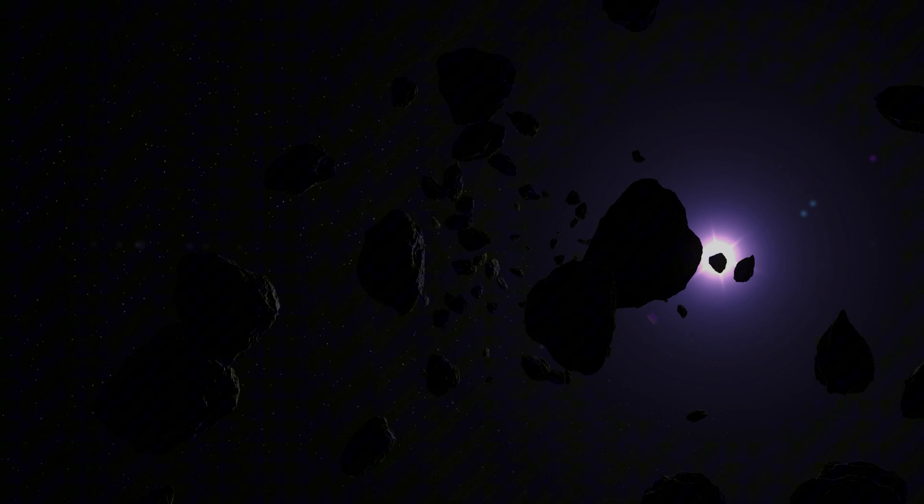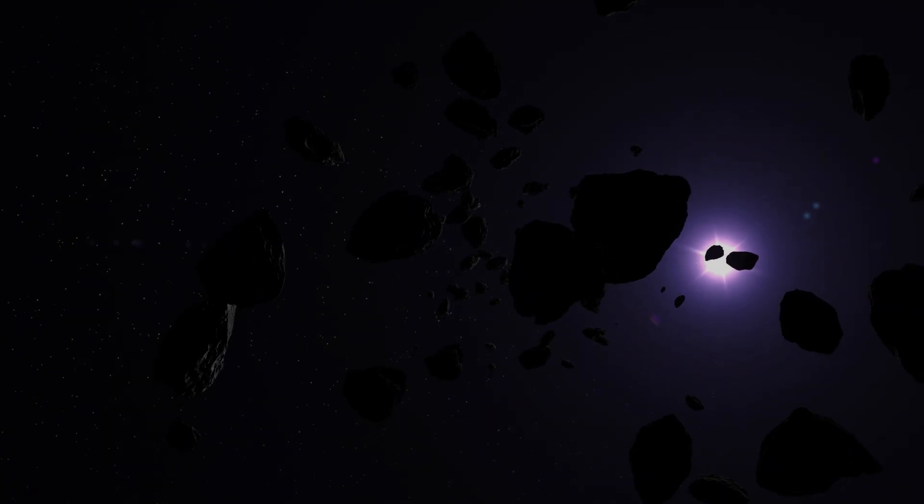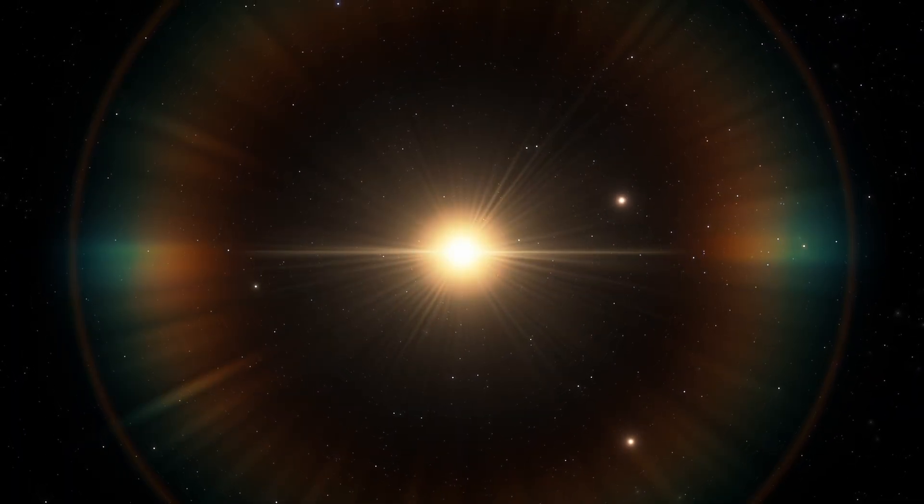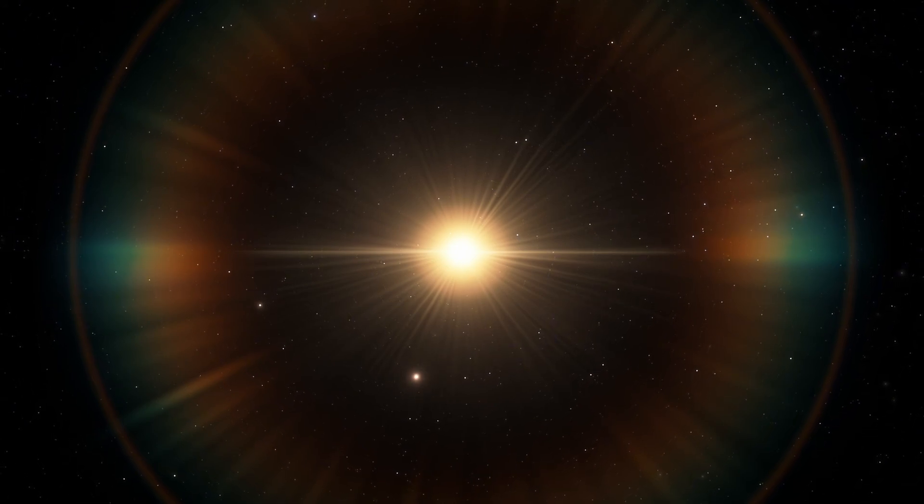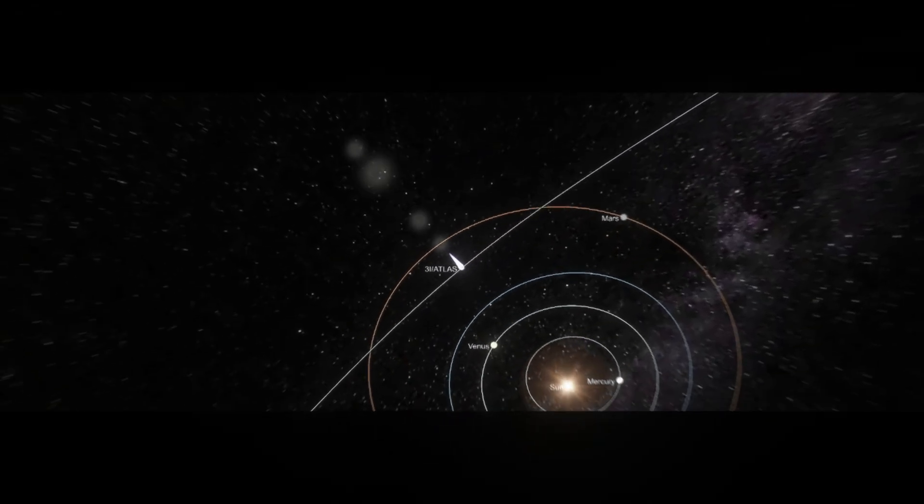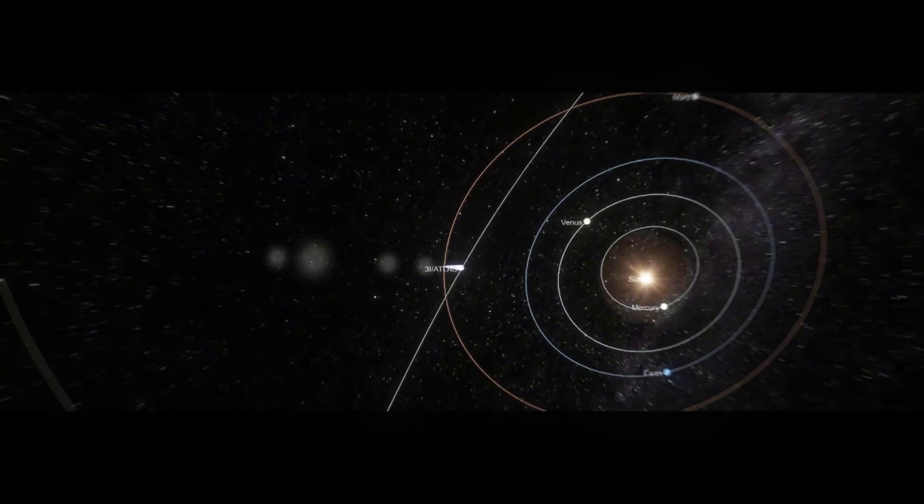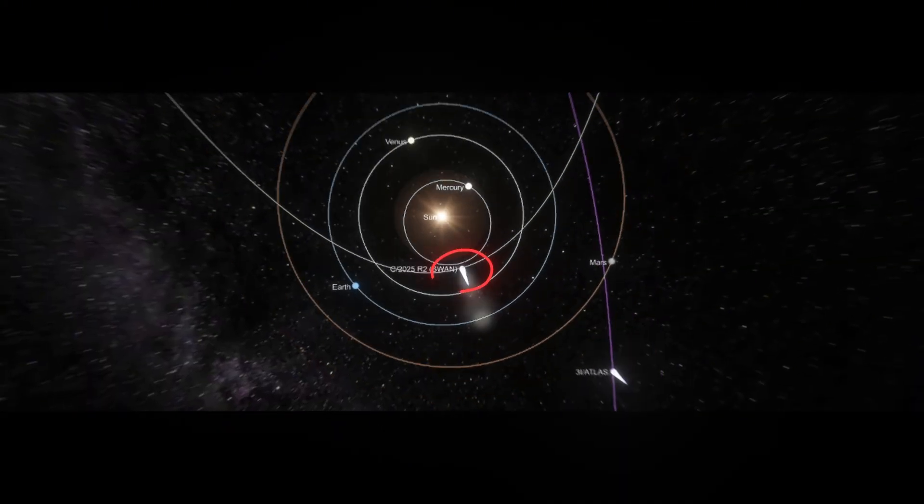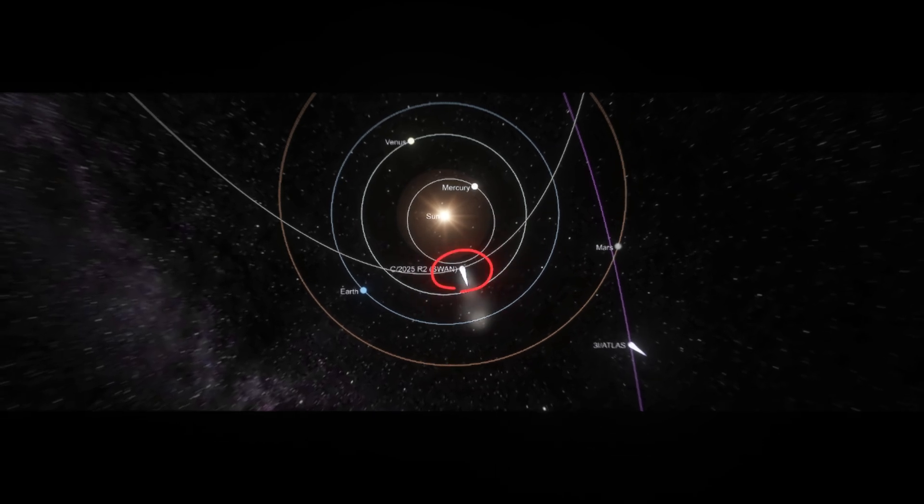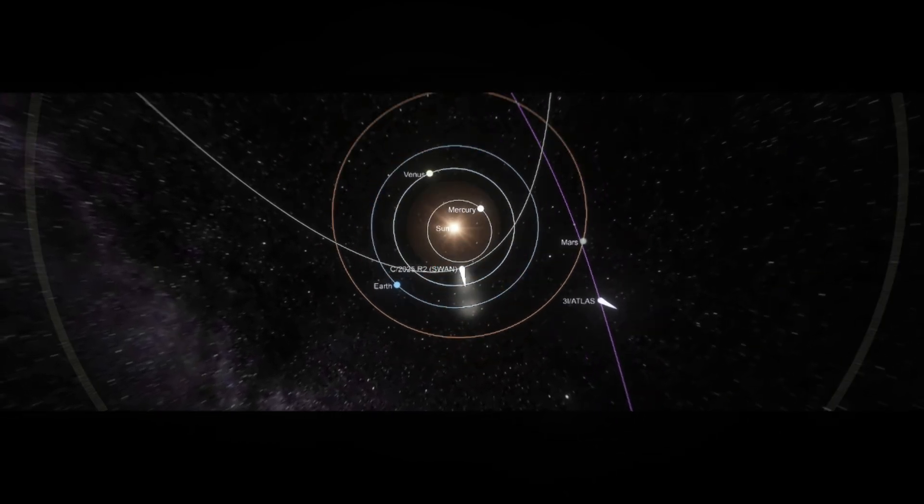Here's where the story takes a dramatic turn. Both objects are following nearly identical paths toward the sun, with their closest approaches scheduled just days apart in late October 2025. Atlas will reach perihelion, its closest point to the sun, on October 29th at a distance of 126 million miles. SWAN will make its approach around the same time, coming within 47 million miles of our star.